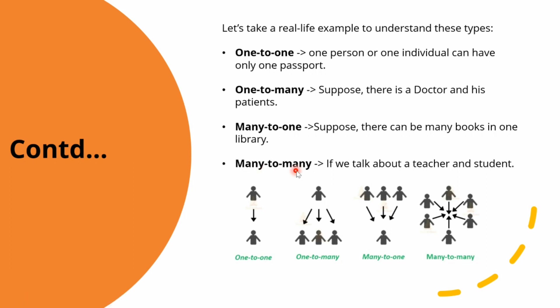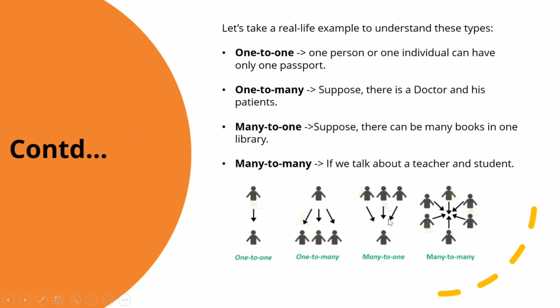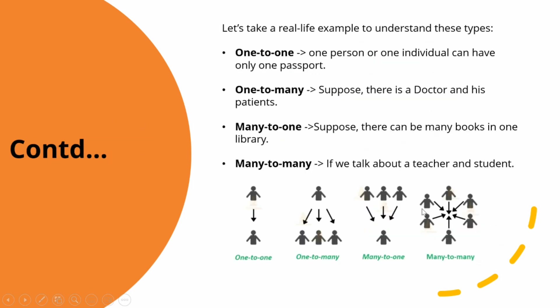The last one is many-to-many. If we talk about a teacher and students, there can be many students associated with one teacher, and one teacher can be related to many students. So this is the relationship between a teacher and students, and hence this is a many-to-many relationship.